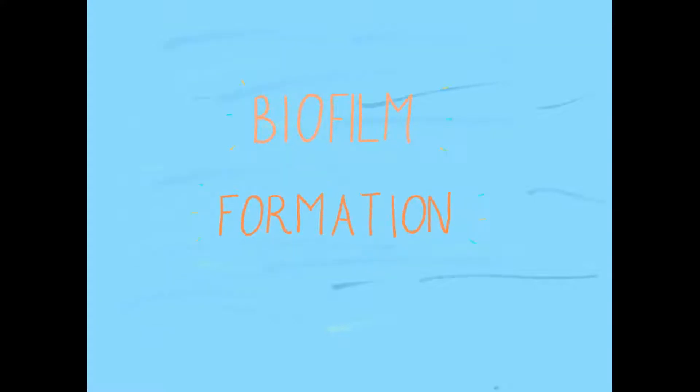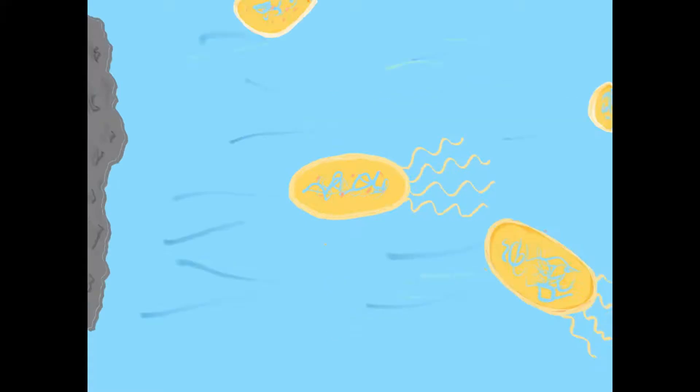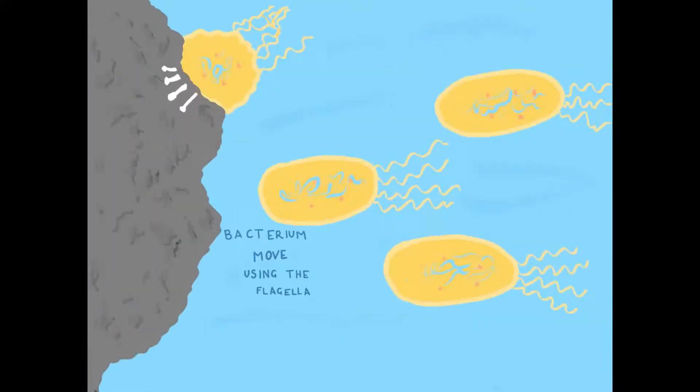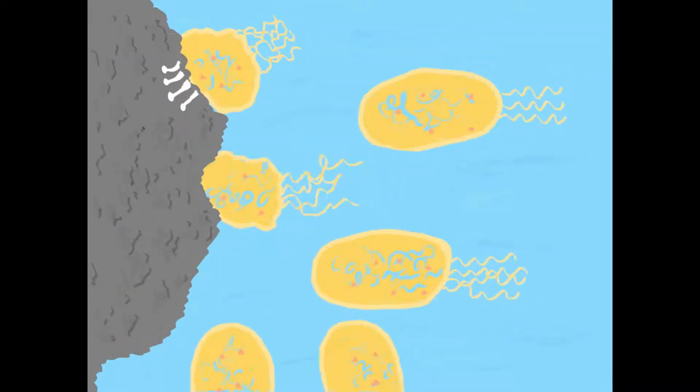Let's see how biofilms form in the first place. Here, we see a single bacteria cell, often referred to as planktonic cells. This is the first stage of formation. The bacterium swim using their flagella through the liquid until they reach a surface.